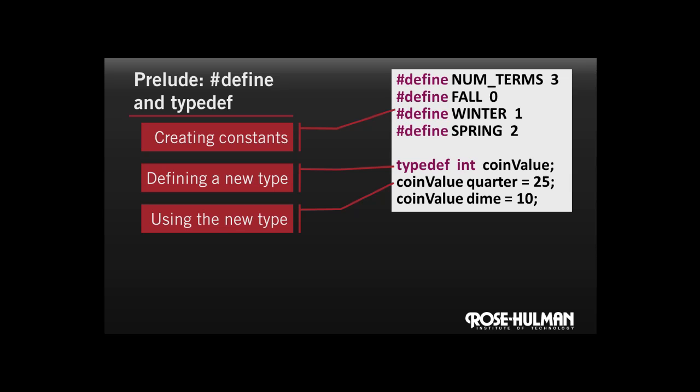Notice that we have the same principle of clarity and maintainability here. If I wanted to update my code so that quarter were, say, 0.25, then I'd need to make it a float, and I would just need to change it in one place right in the typedef. Notice the format: typedef, and then give a description of the old type — in this case an int — and then the new name that I want to use for it.